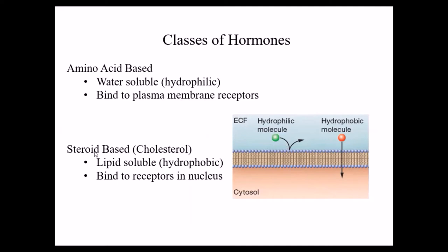The other class is called steroid-based hormones. These are essentially lipids, and many are based on cholesterol-type molecules — not that cholesterol itself is a hormone, but steroid-based hormones are formed from cholesterol-type molecules. These are lipid-soluble, also referred to as hydrophobic. Because they are lipid-soluble, this hydrophobic hormone molecule can diffuse directly across the plasma membrane. Therefore, when it looks for its receptor to bind to, it will find it inside the cell and usually inside the nucleus.